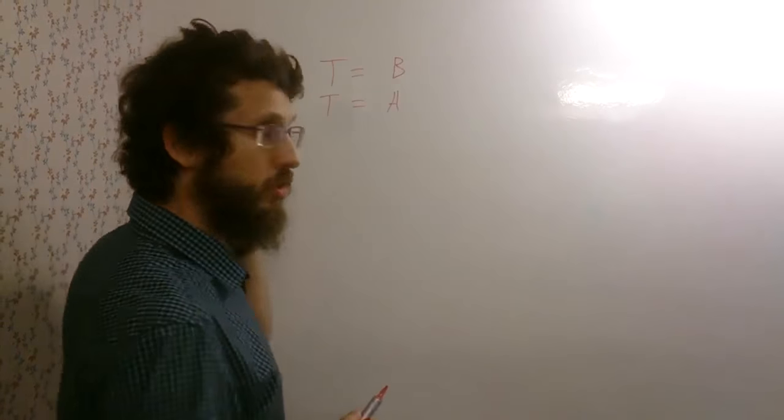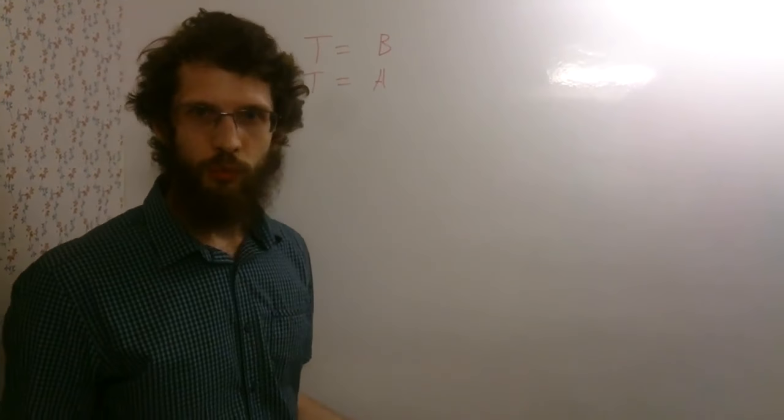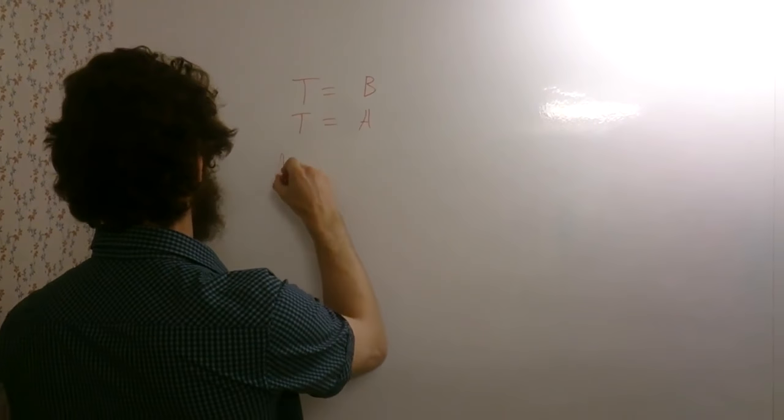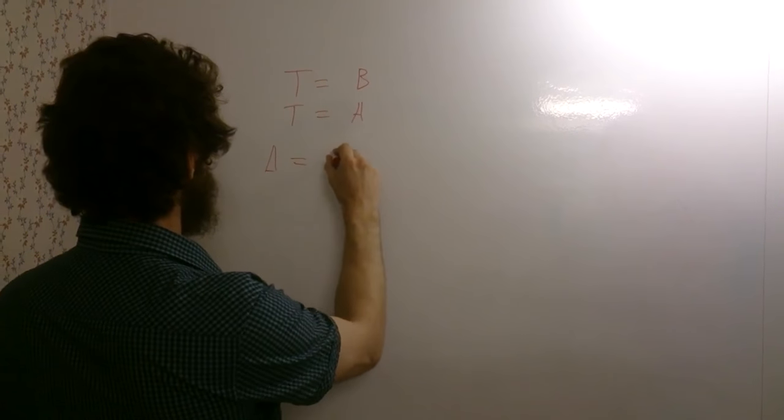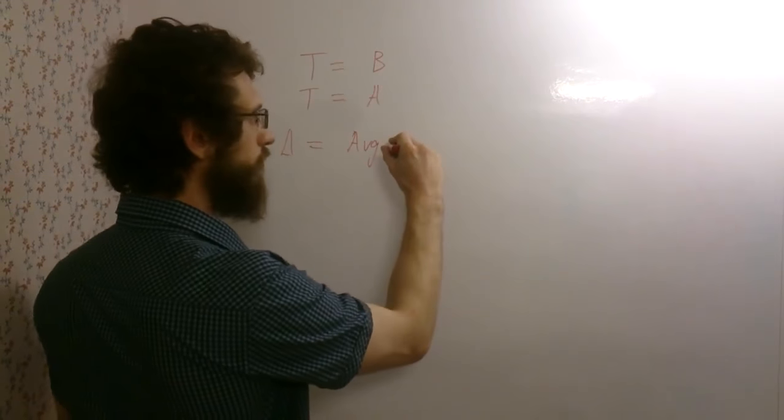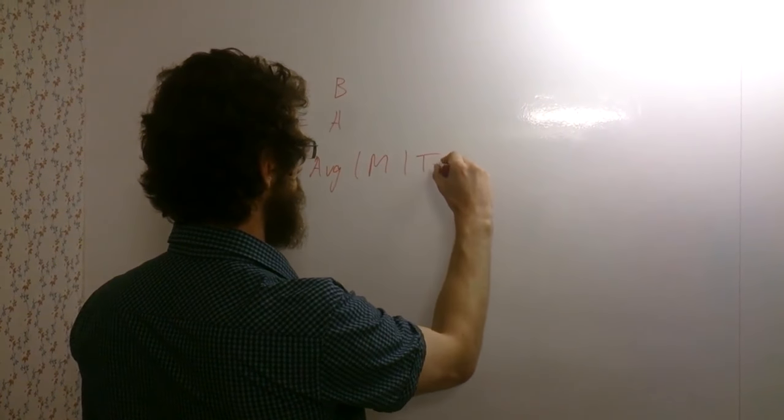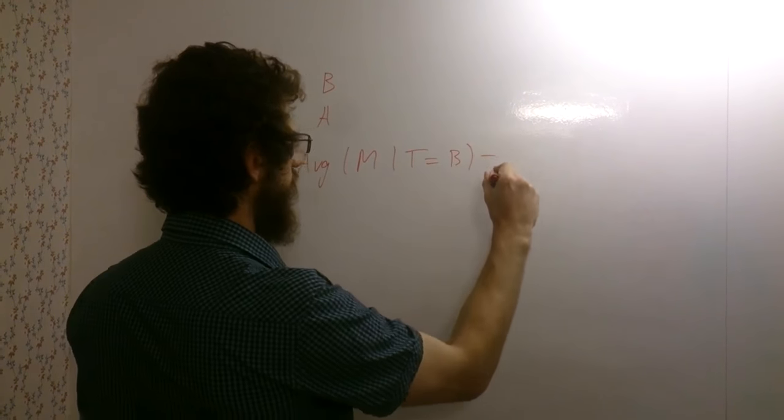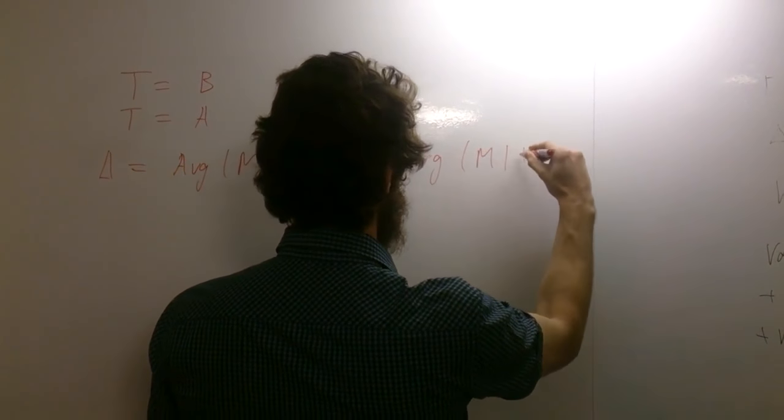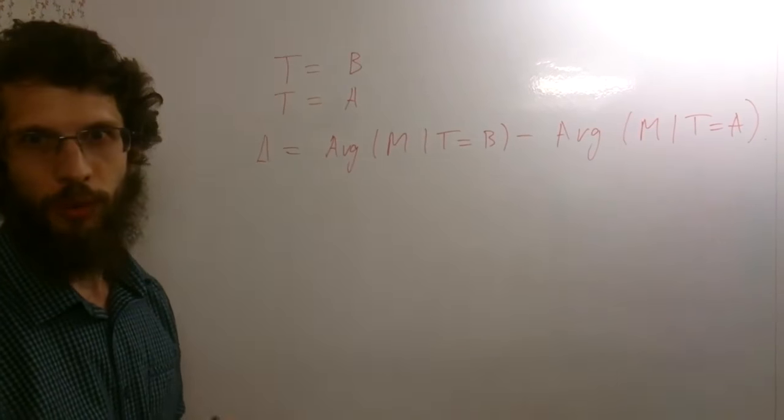The idea is to divide users into two groups and to show B to the first group and A to the second group, and to measure the difference in the average value of measure M conditioned by T equals B, and the average value of measure M conditioned by version A. Consider the following problem in our paper.